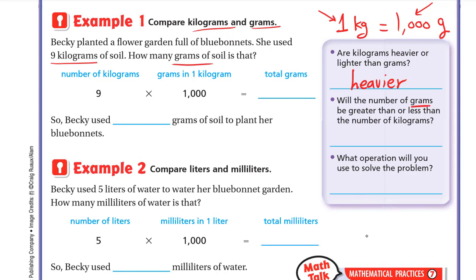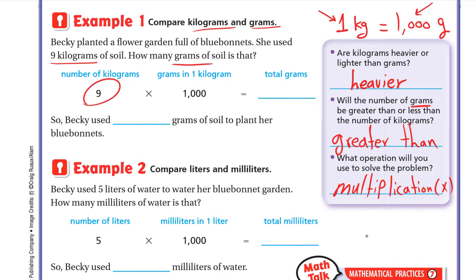The number of grams will be greater than the number of kilograms. The operation we use is multiplication — we multiply kilograms by 1,000 to get grams. So 9 multiplied by 1,000: you just write the 9 and add three zeros, giving 9,000. Becky used 9,000 grams of soil.